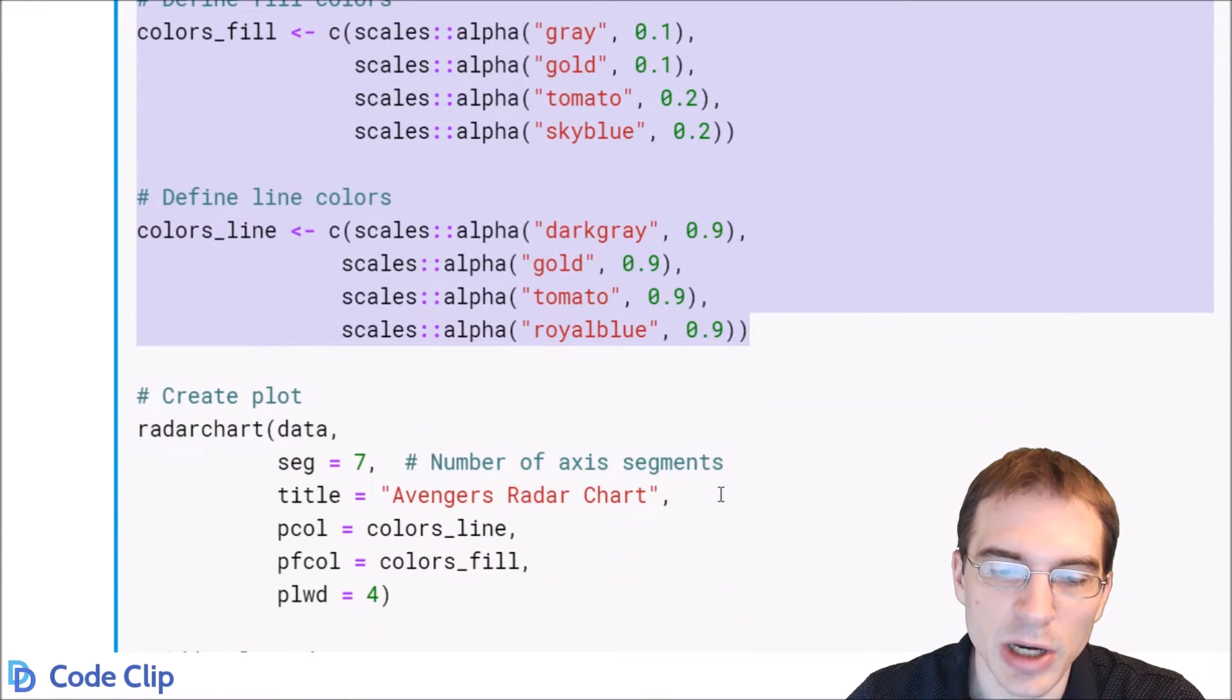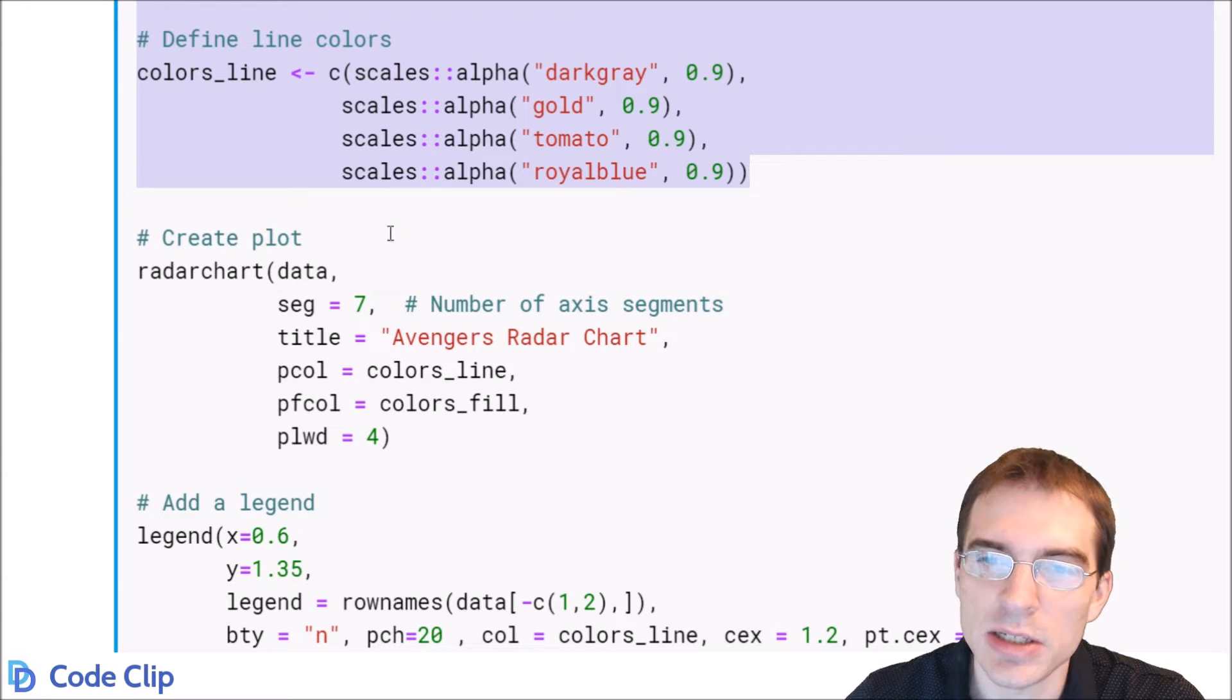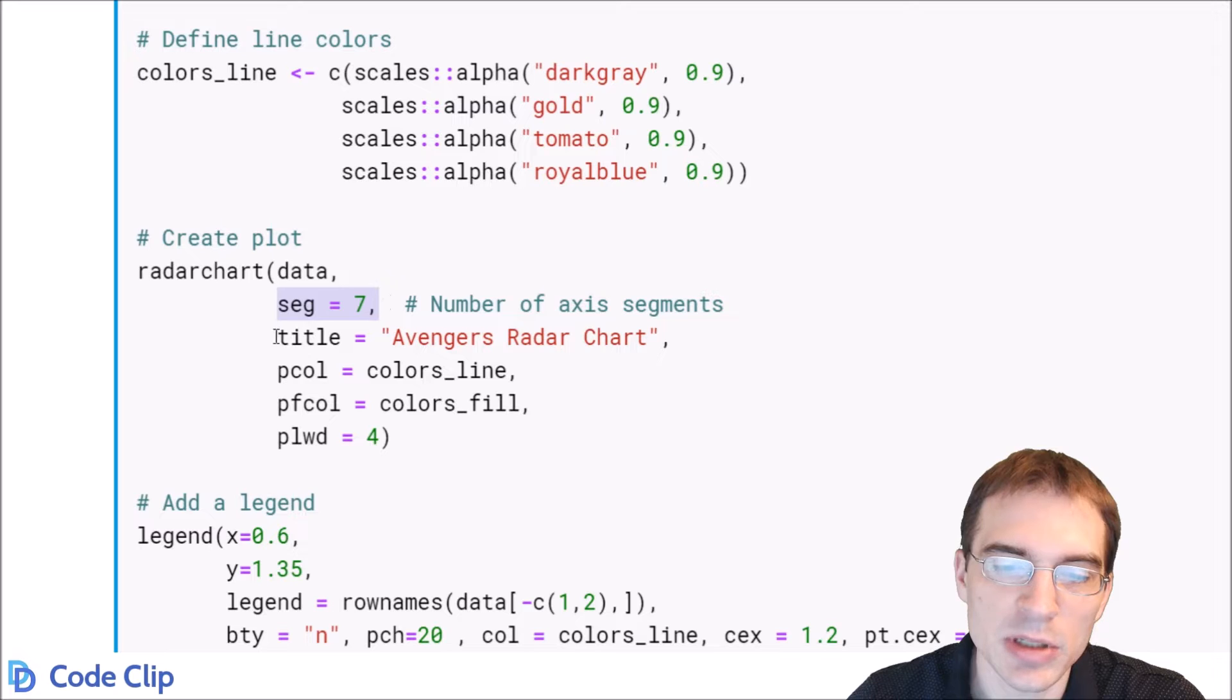And then at the bottom, all we have to do is pass in the data set that we constructed to radar chart. Again, we're going to do seven segments, different title. Here, we're passing in the custom colors we defined above for the colors of the plot. Also setting a different line width.